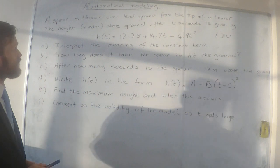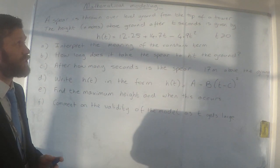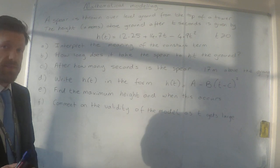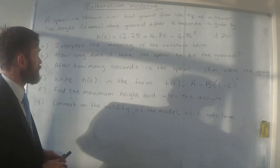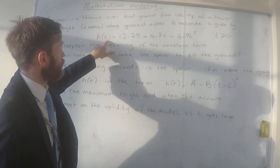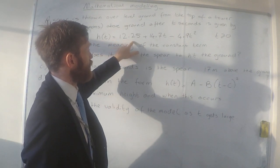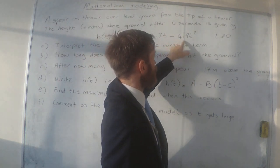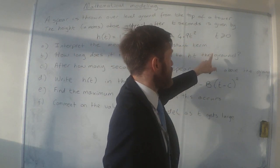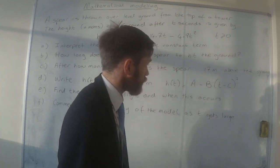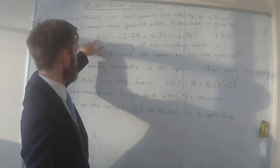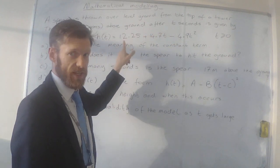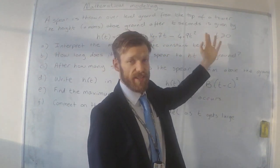A spear is thrown over level ground from the top of a tower. The height in metres above the ground after t seconds is given by h(t) = 12.25 + 14.7t - 4.9t². Where t is greater than or equal to zero. So what that's saying is the height as a function of time is given by this equation, as long as the time is greater than or equal to zero.